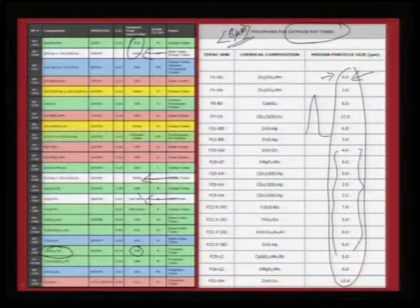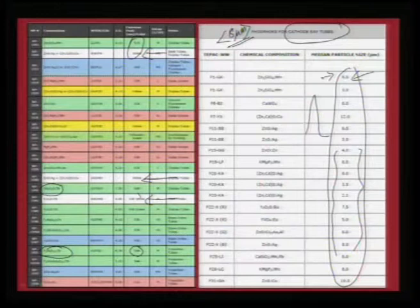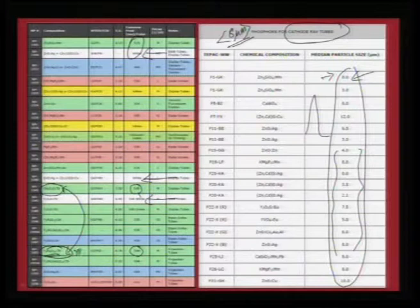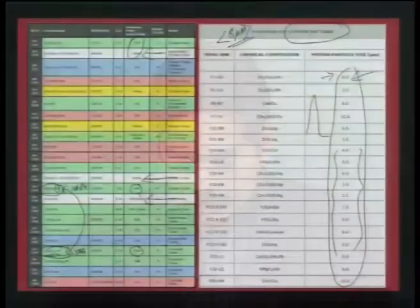Gadolinium oxysulphide doped with terbium also shows a 545 nm emission. The correlation between the YAG compound and gadolinium oxide is that both give the same emission at 545 nm because the dopant is the same — terbium³⁺. So it is not the host that controls the light emission but the dopant, through specific D-to-F or F-to-D transitions. For red emission it is always europium that gives emission at 620 nm.